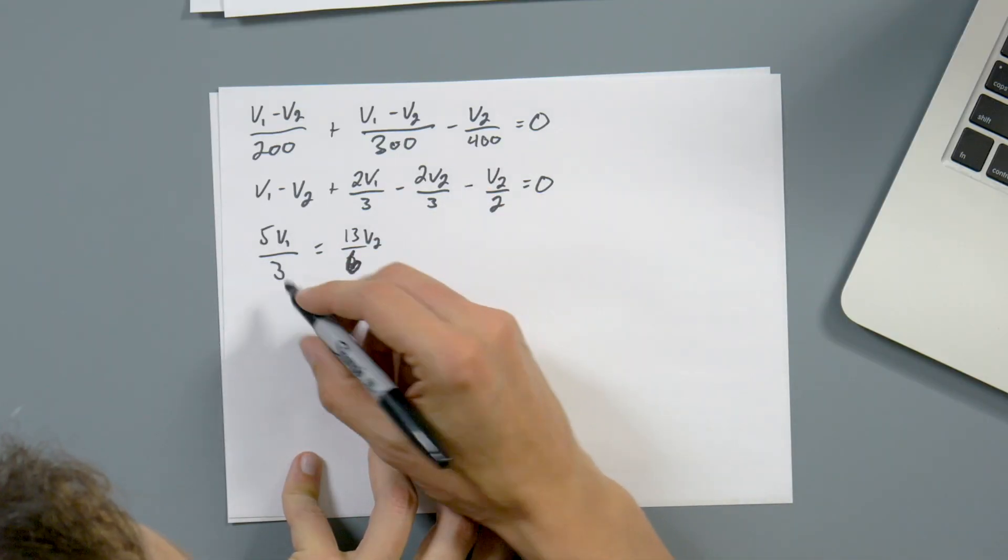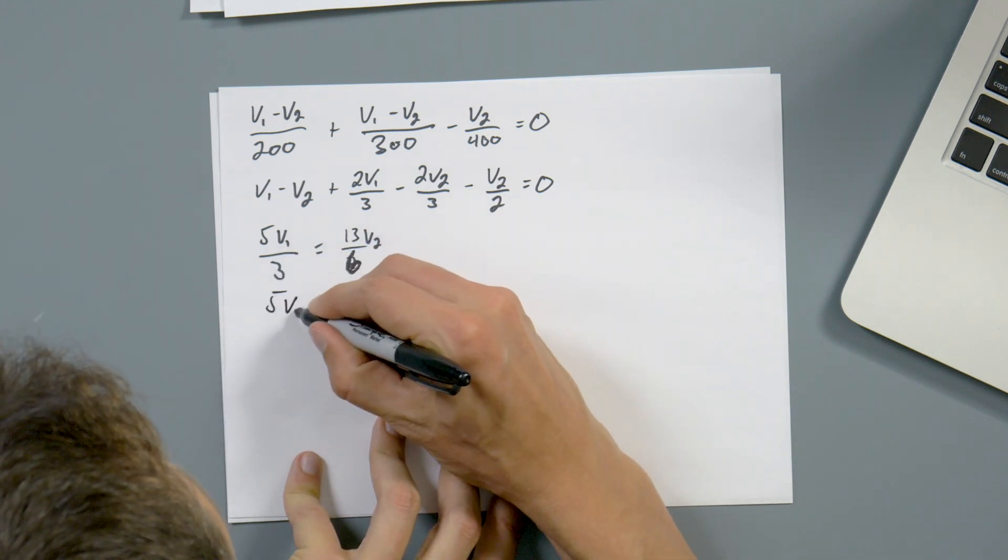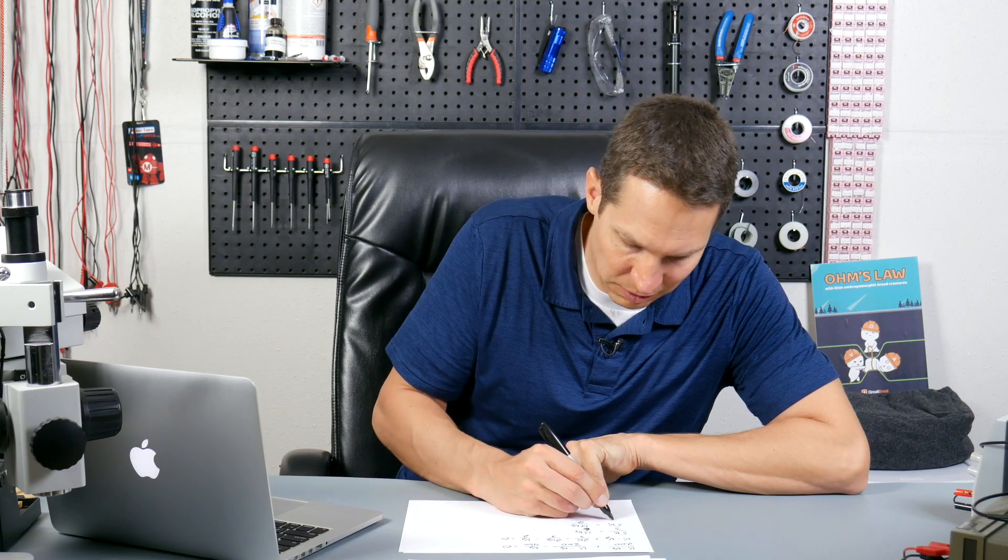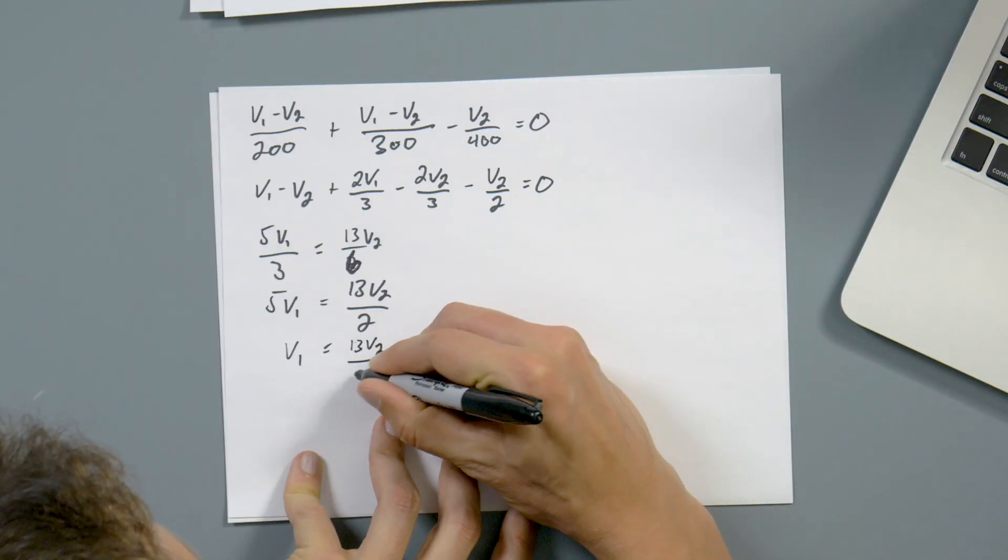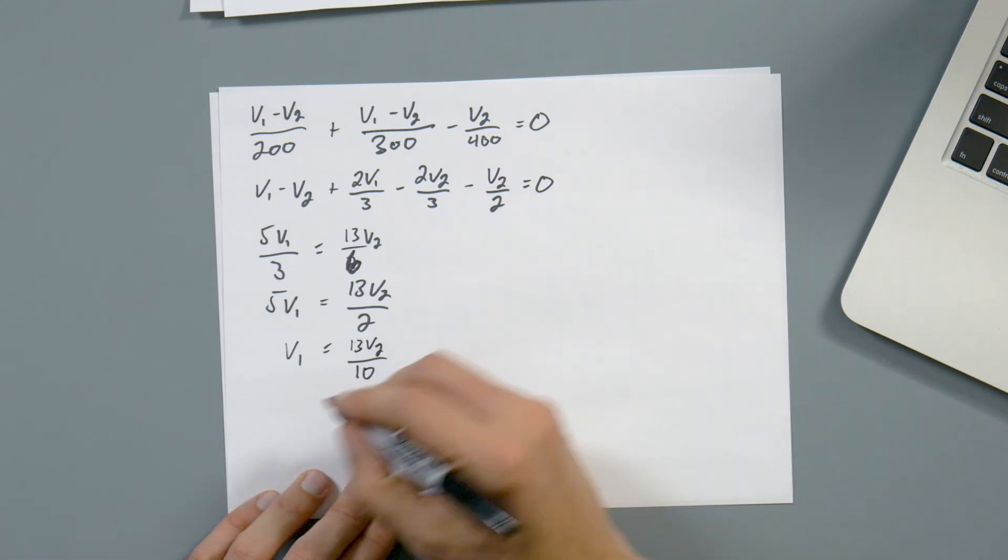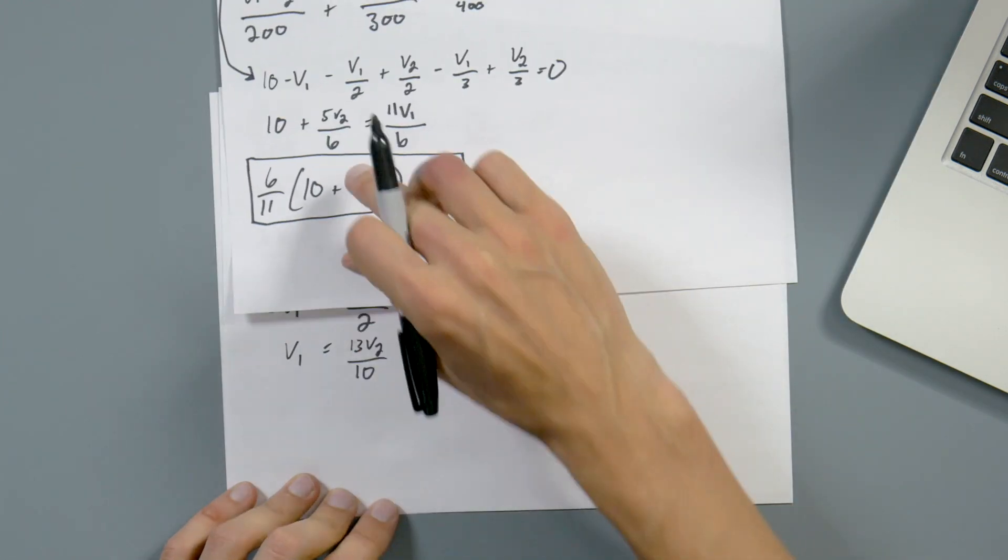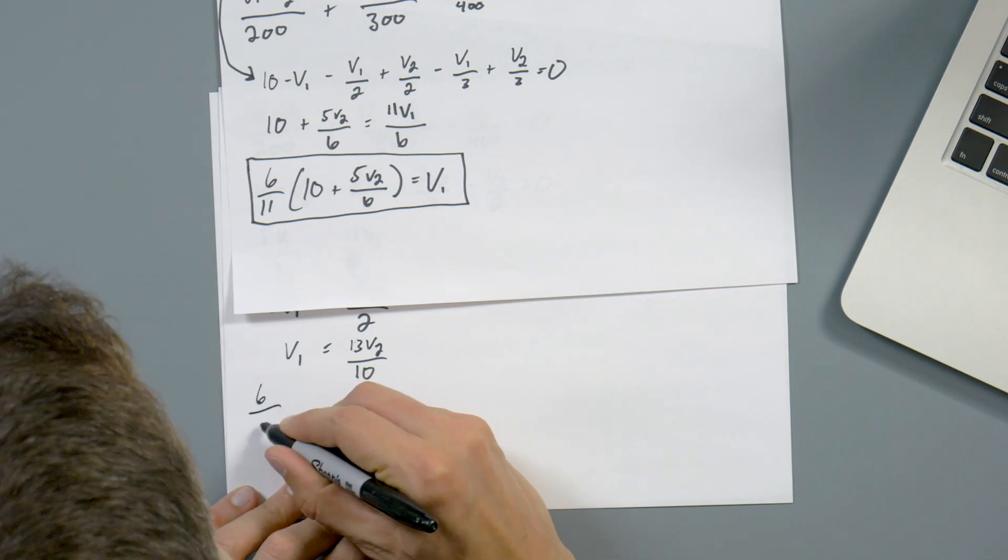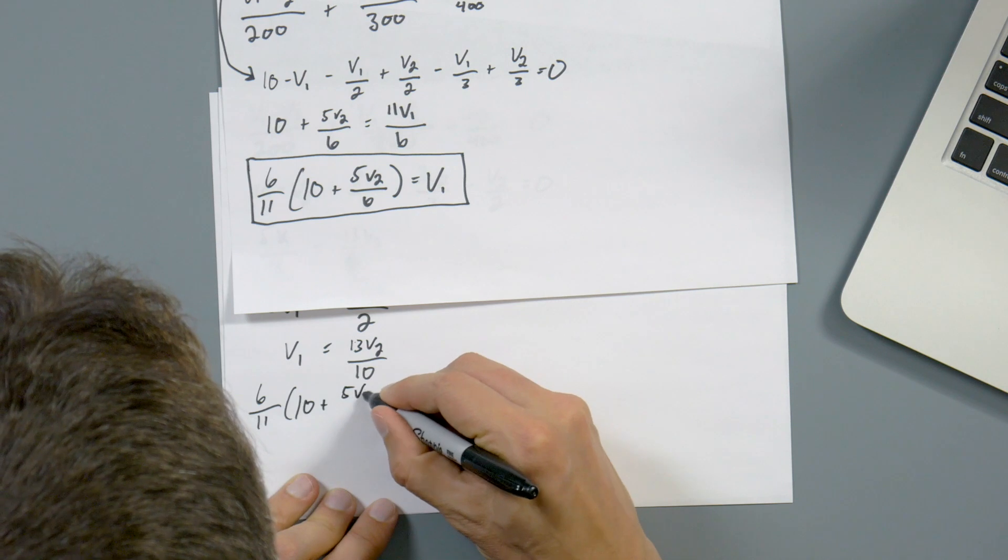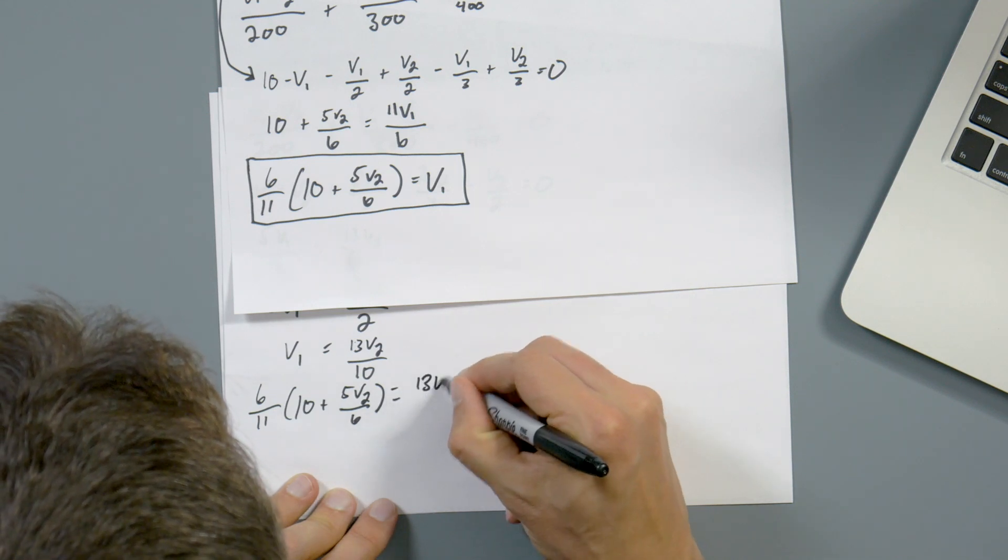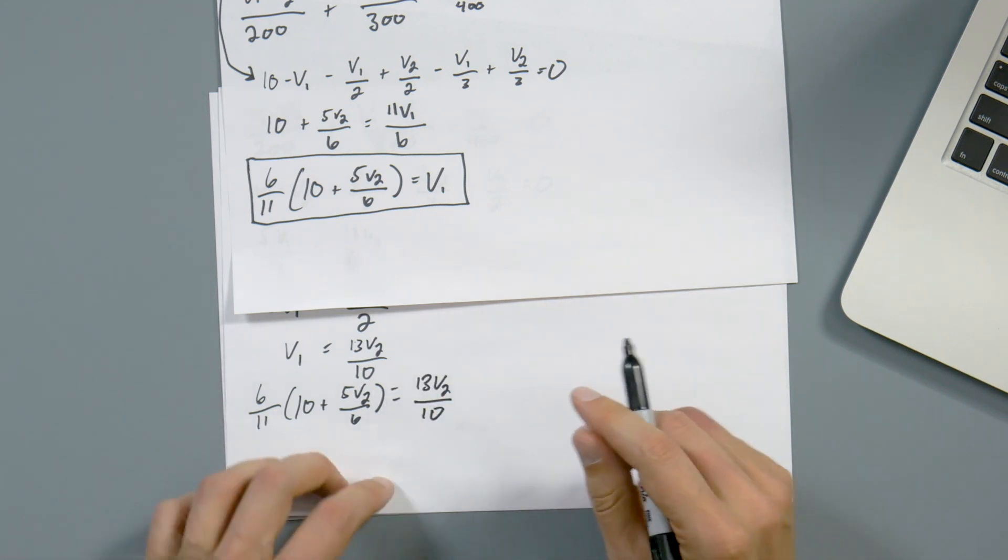So now to further simplify this multiply both sides by three. So now we just have 5 V1 equals 13 V2 over 2. We can even simplify that further and just get V1 equals 13 V2 over 10. So now we take this and we replace this V1 with that. I think right now, if you're still with me, congratulations, you're probably saying, okay, this is getting complicated. I feel like we've got multiple pieces of paper here, everything's kind of going crazy. And that's one of the challenges with this method.